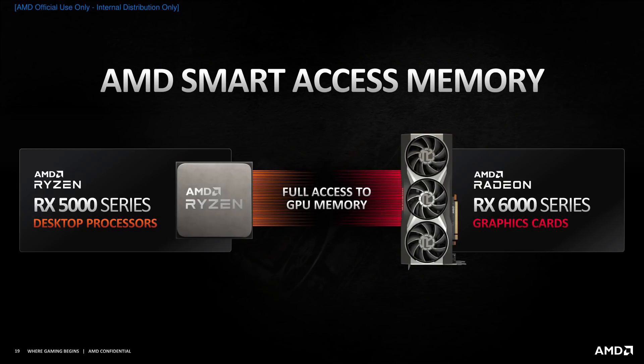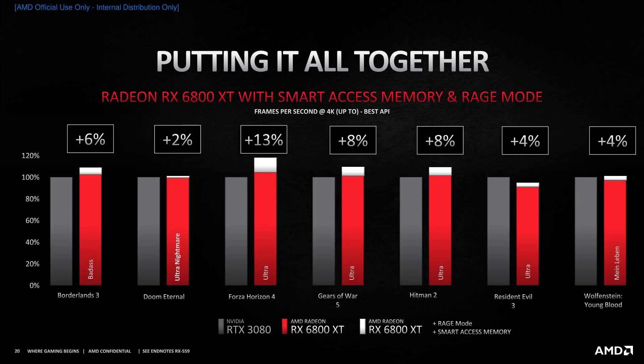AMD also has a new feature called Smart Access Memory, or SAM, which allows the CPU to access the GPU memory for some performance gains. AMD has a chart showing the performance difference with SAM and Rage Mode on, but it's for the RX 6800 XT. They conveniently didn't put out an equivalent chart for the RX 6900 XT, but we can safely assume the performance difference will be very similar.